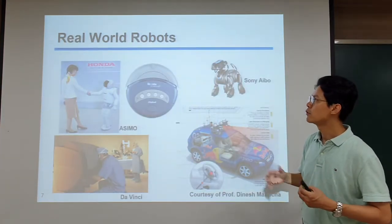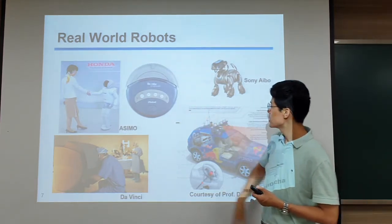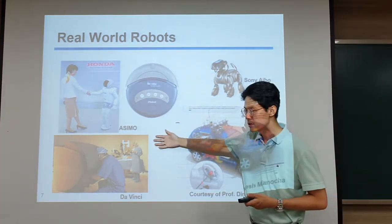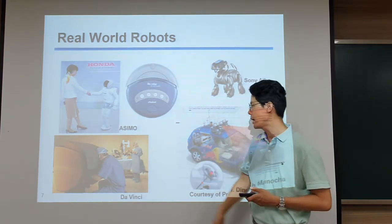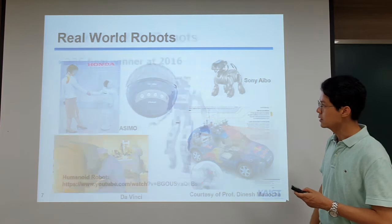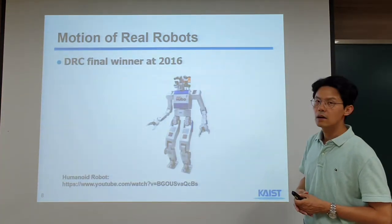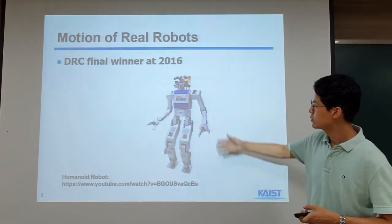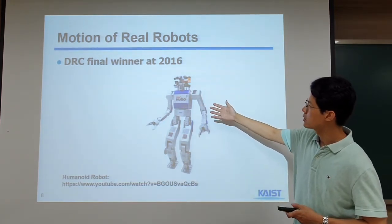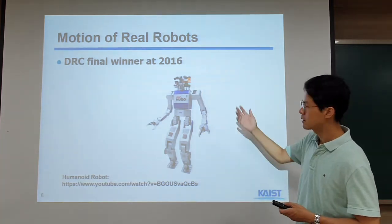There are many real-world robots, like vacuum machines, toy robots, and medical surgery robots. There are also lots of developments in autonomous vehicles. KAIST has some notable recognitions — the HUBO humanoid robot won the DRC final competition in 2016.